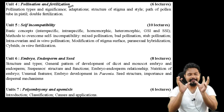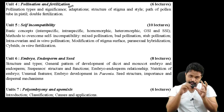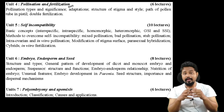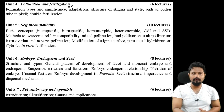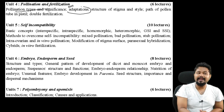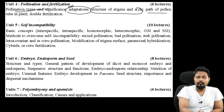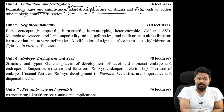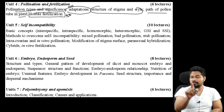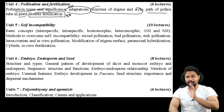Pollination - cross pollination and self pollination - pollination types and significance, adaptations for pollination, structure of stigma and style, path of pollen tube in the pistil, and double fertilization. Double fertilization is very important and I will discuss it in detail.